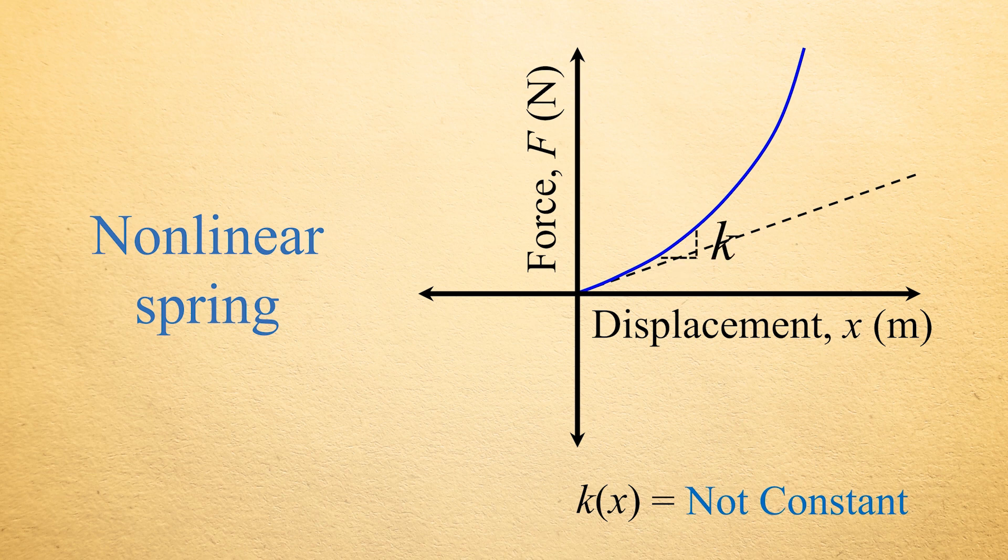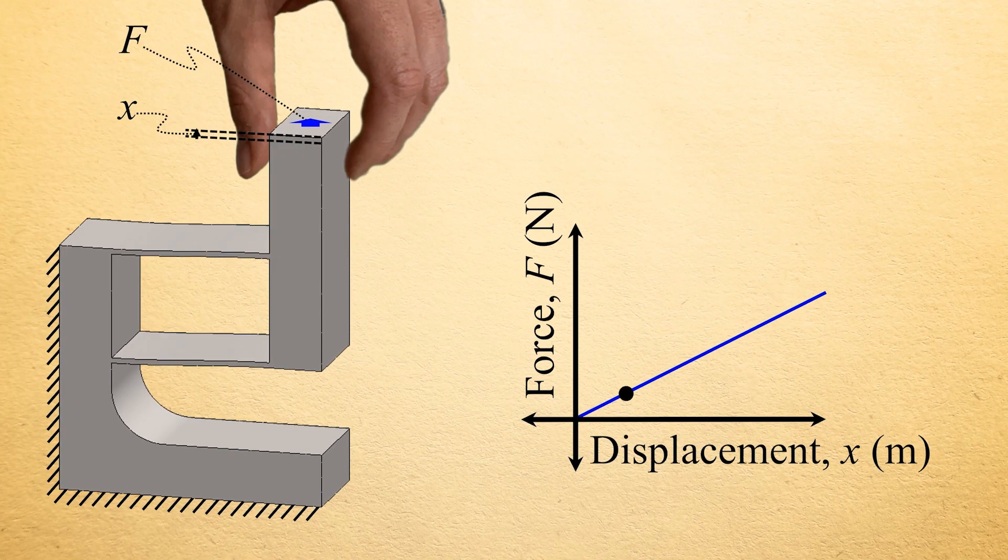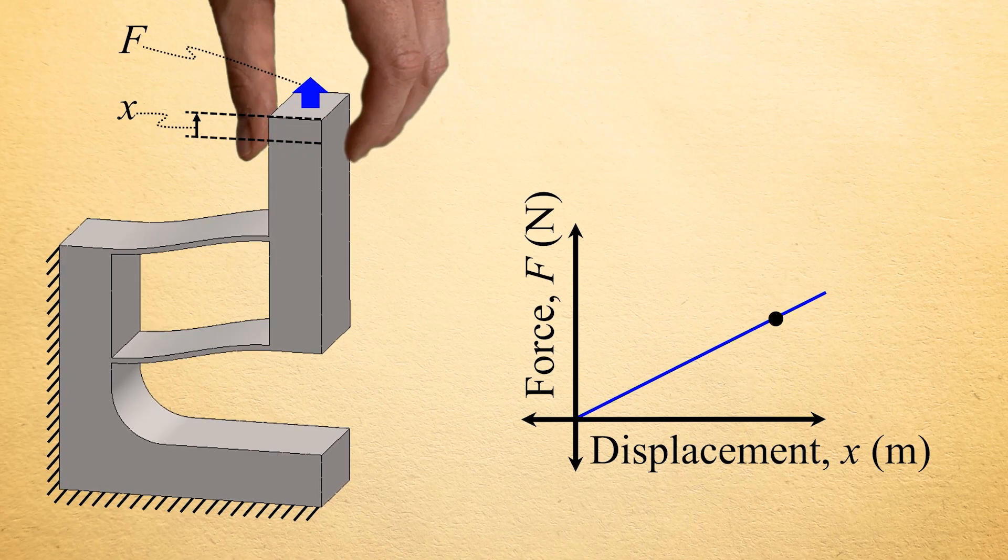Note that the slope, that is the stiffness, at different locations along this exponentially growing force displacement plot increases as the displacement increases. Thus, non-linear springs that exhibit such exponential plots stiffen as they are deformed. Most springs tend to stiffen some amount as they are deformed.